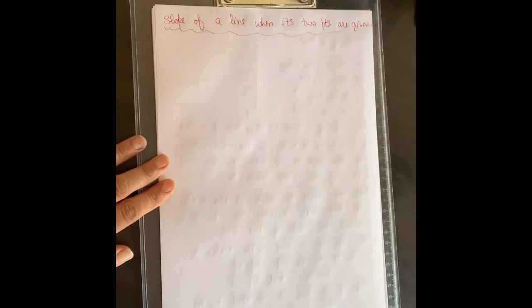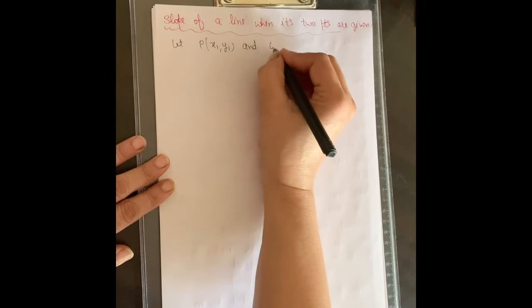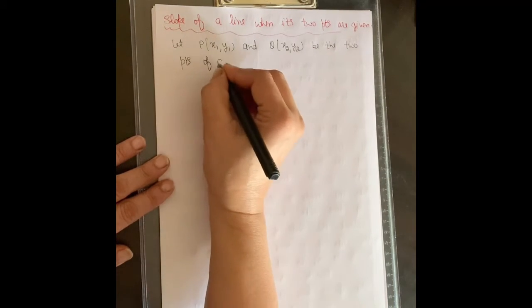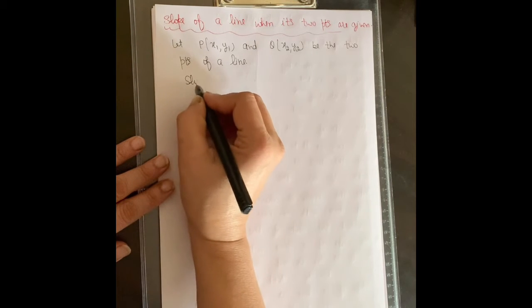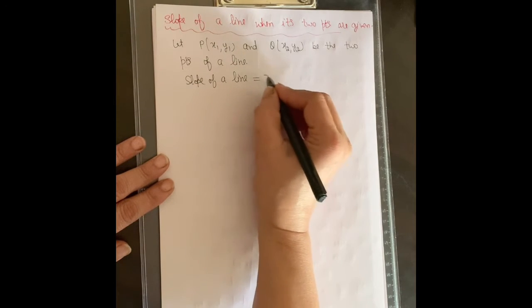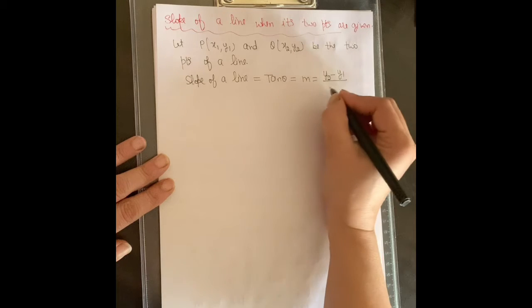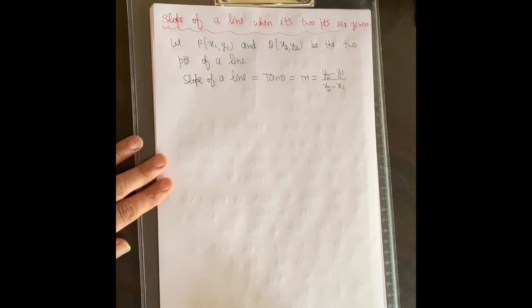We assume we have two points. Let P have coordinates (x1, y1) and Q have coordinates (x2, y2) — these are the two points of a line. The slope, or tan theta, or m, is calculated as: m = (y2 − y1) / (x2 − x1). This is our slope of the line.